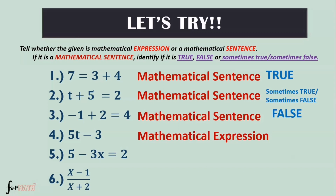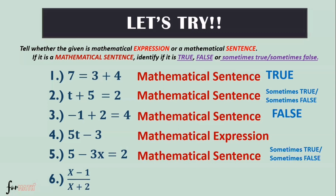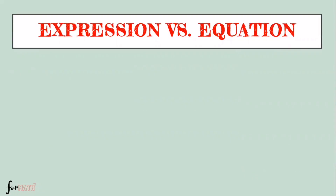Number 5: 5 minus 3x equals 2. This is a mathematical sentence, and it is sometimes true, sometimes false because we don't know the value of x. Number 6: x minus 1 divided by x plus 2. This is a mathematical expression. So that's how we identify a mathematical sentence and a mathematical expression: an expression is a group of numbers or variables with or without an operation, while an equation is a group of numbers or variables with or without an operation plus an equality or inequality sign.